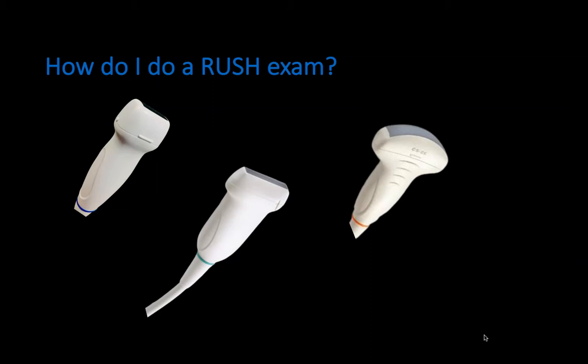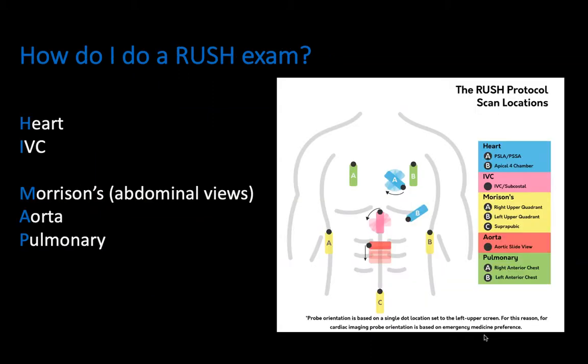Next, we'll talk about the different views in the RUSH exam. There's an acronym commonly used: HI-MAP. H stands for heart, reminding you of the parasternal long and short axis views and the apical four chamber view. I stands for IVC. M stands for Morrison's, reminding you of the abdominal views — the right upper quadrant, left upper quadrant, and suprapubic views. A stands for aorta, and P stands for pulmonary. We'll talk through each view with an emphasis on pathology that may cause shock or hypotension.